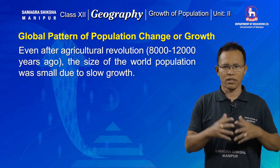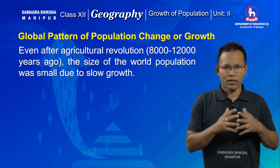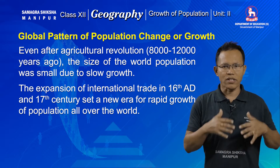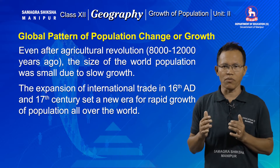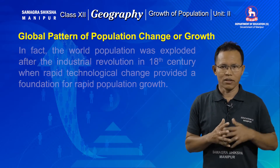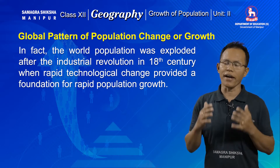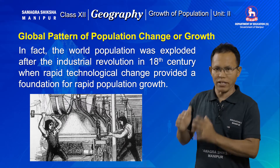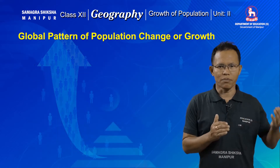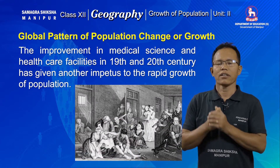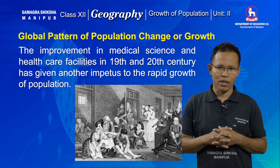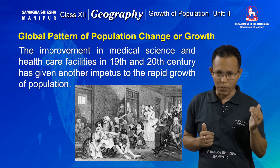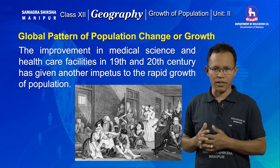The expansion of international trade by the 16th and 17th century had set a new era for population change at a faster rate. The industrial revolution starting in the 18th century gave technological-scale changes and also gave impetus to the rapid growth of population. Population growth in the 19th and 20th century also contributed to the upward growth of human population at faster rates.